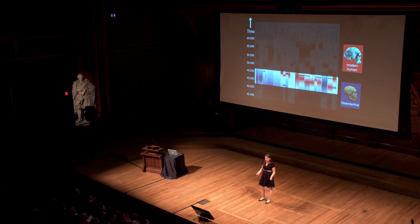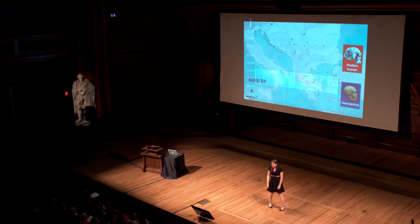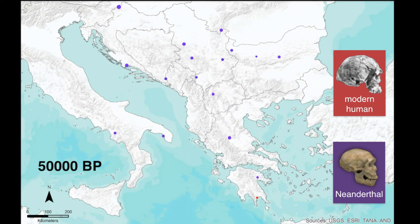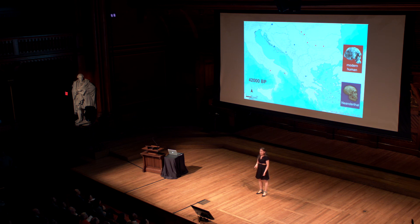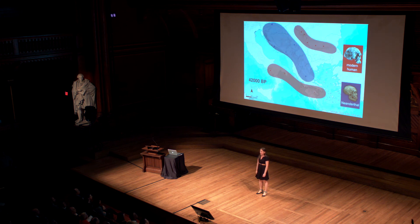I got a sense of the answer when I plotted the data on a map. Here you see purple dots when Neanderthals are at a site, and as time passes, red dots will appear when modern humans get there. Starting at 50,000 years ago, Neanderthals are widespread in the region. Then we see modern humans replace them along the northern river valleys and southern coast, and the last Neanderthals are in the central mountains of present-day Serbia and Croatia. Eventually, we only have modern humans left. Although we know from genetic evidence that Neanderthals and modern humans can and did sometimes interbreed, in the case of the Balkans, they mostly avoided each other in distinct geographic zones.